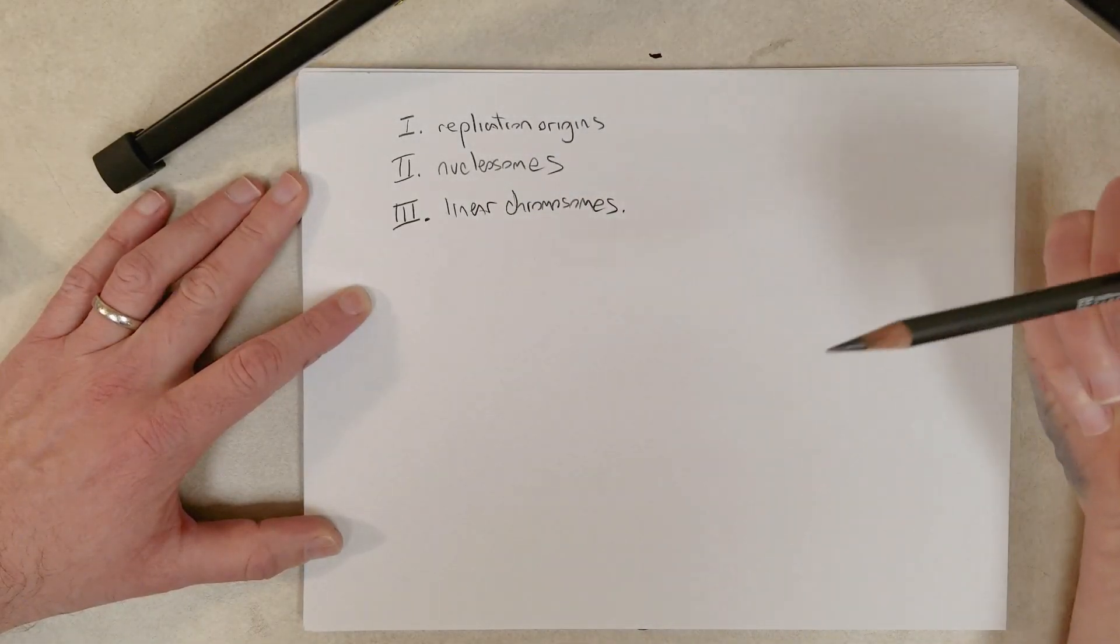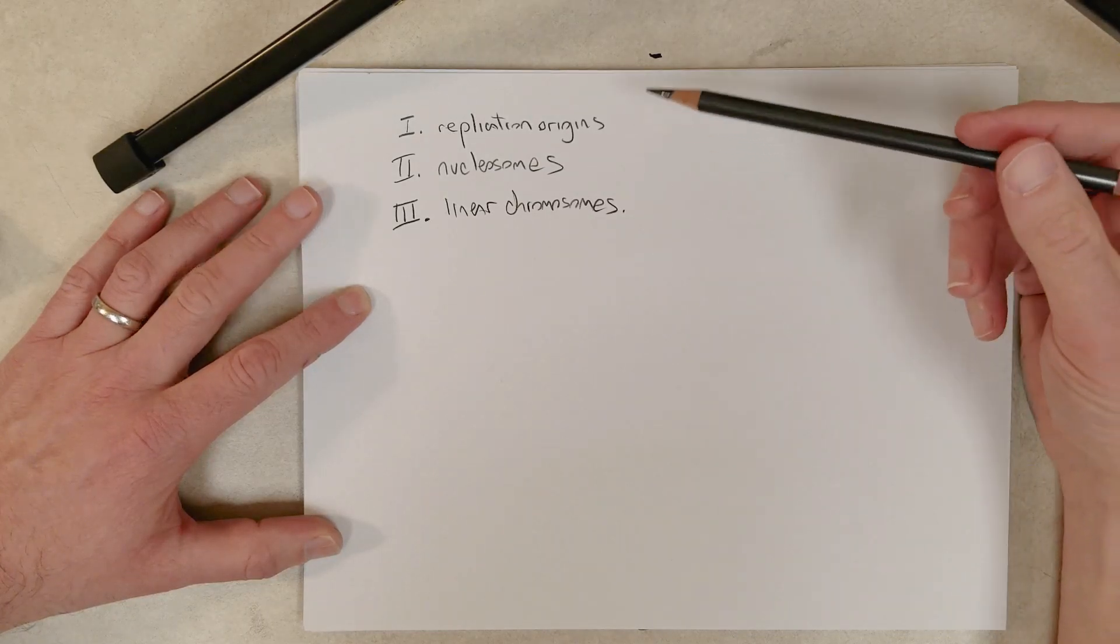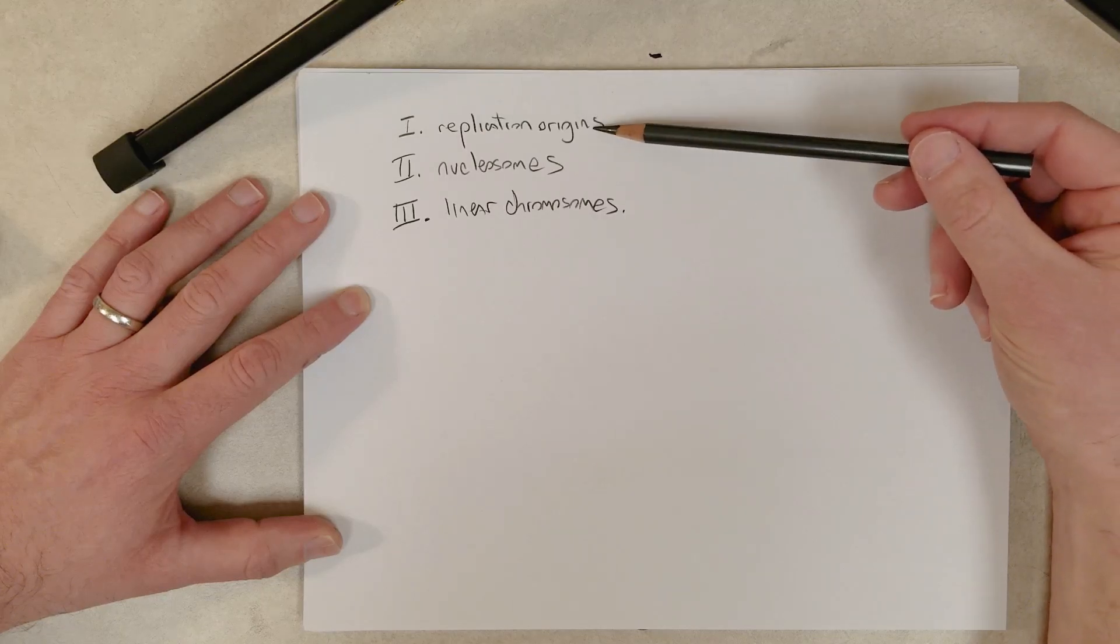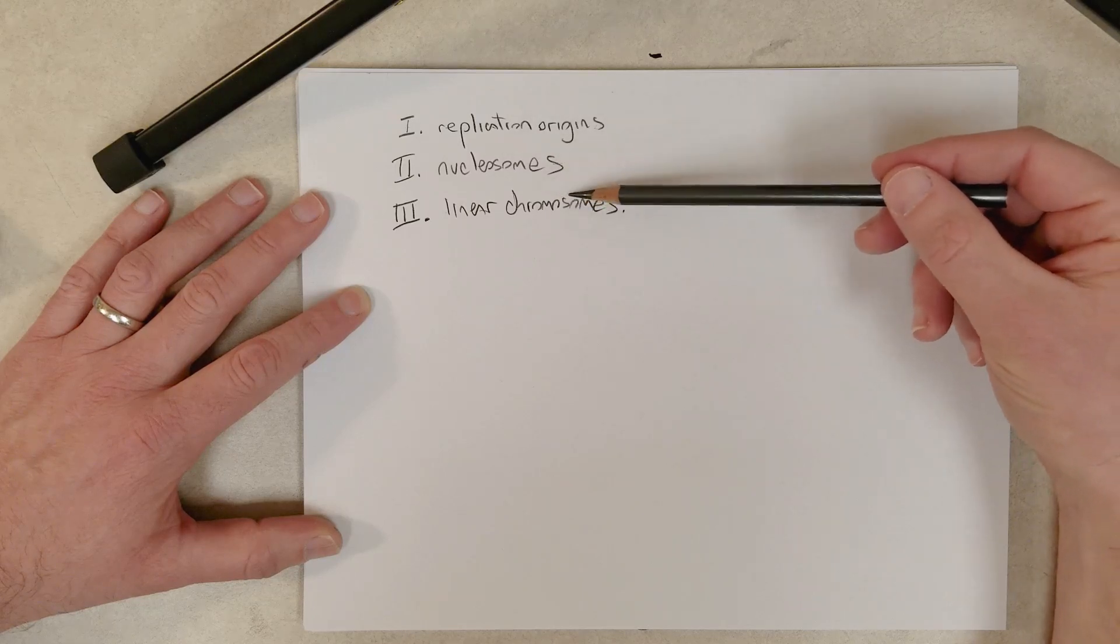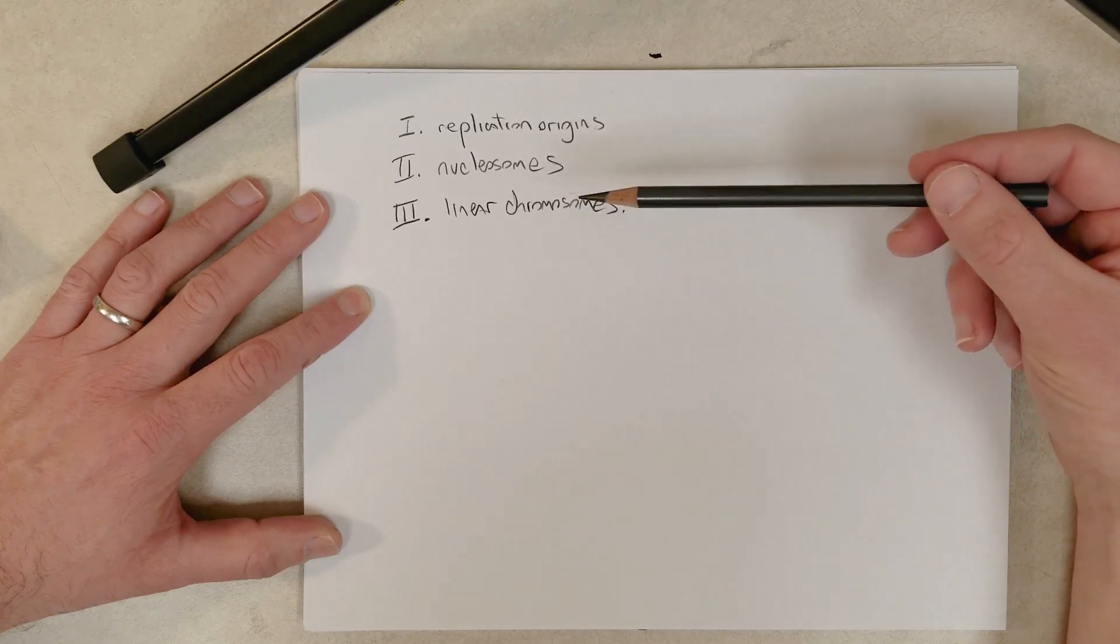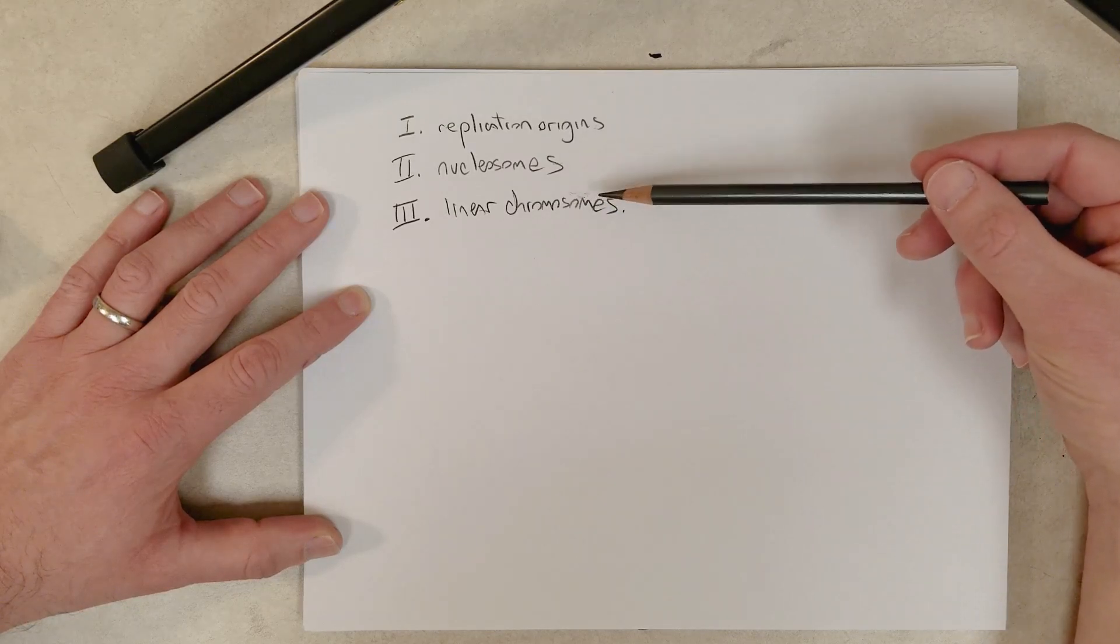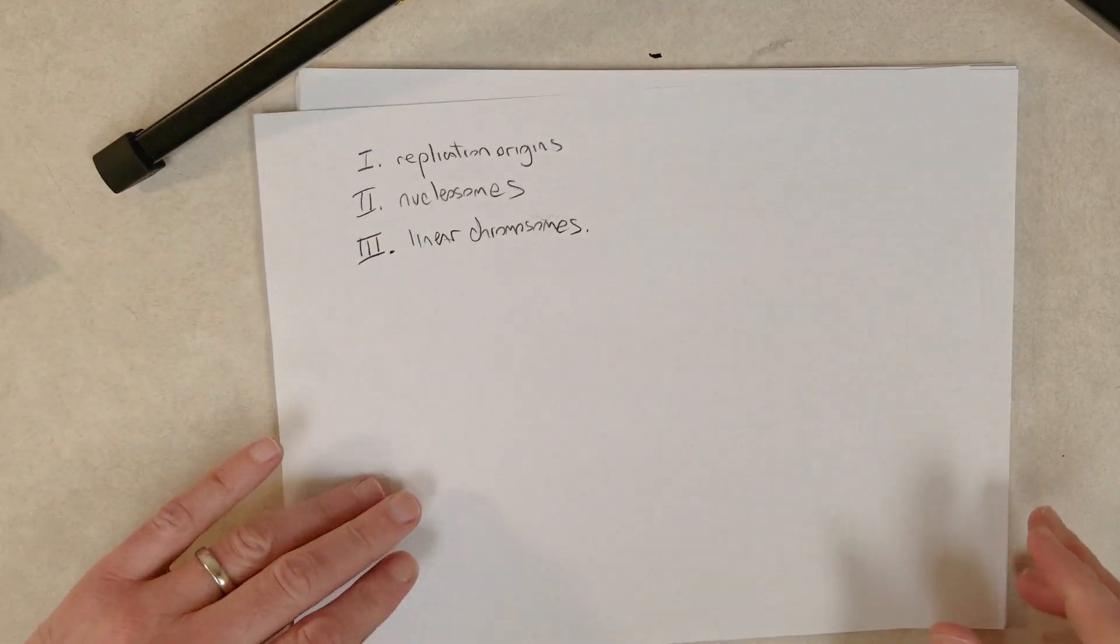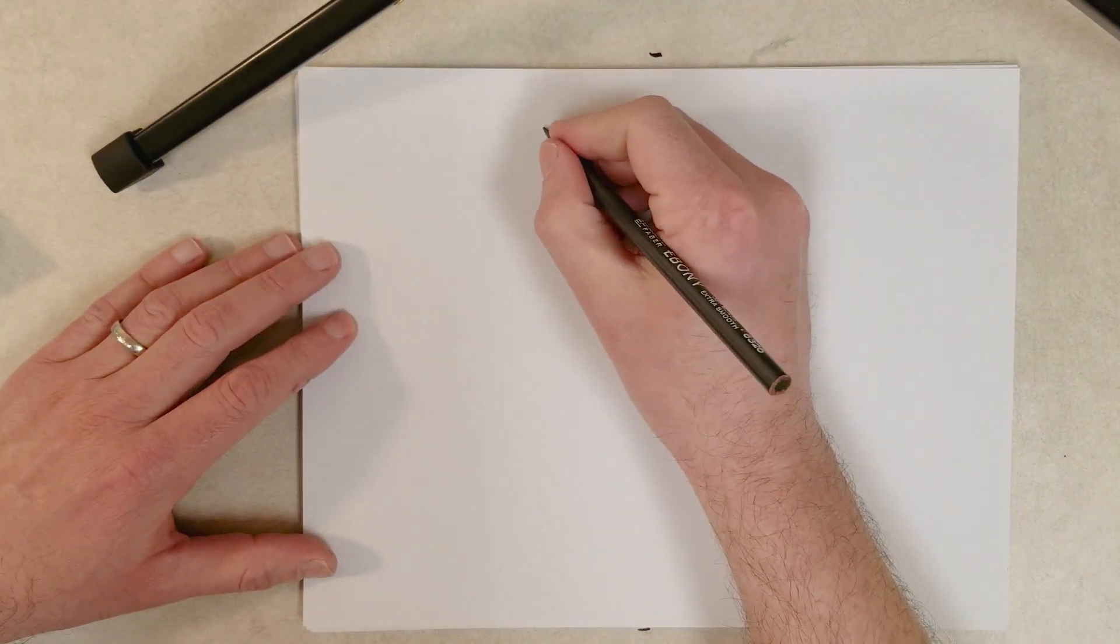So our discussion of replication in eukaryotes will focus on the differences, and the differences have to do with the number of replication origins, nucleosomes in eukaryotes, and the problem with linear chromosomes, replication of linear chromosomes, particularly with respect to the ends of those chromosomes. So let's take the first one. Now, this one is really simple.